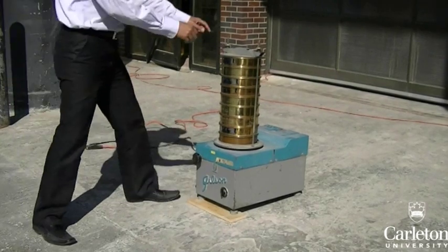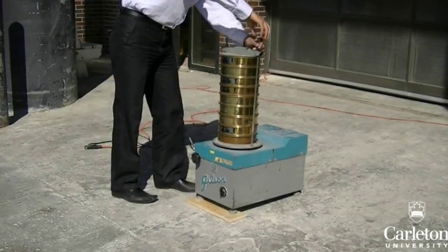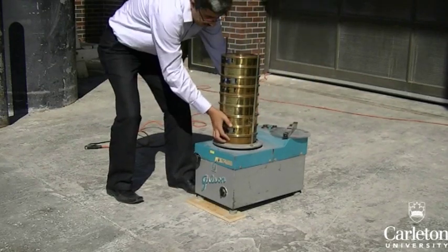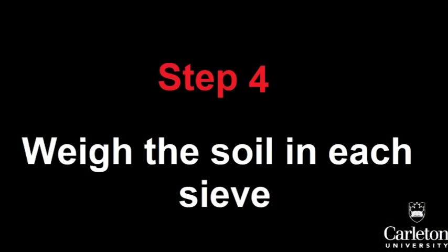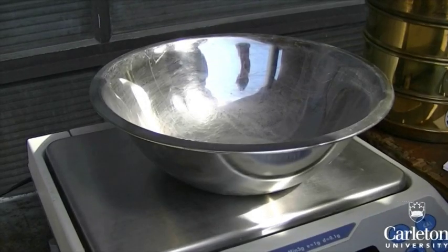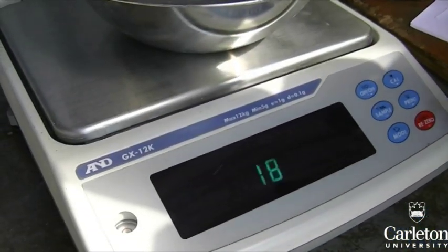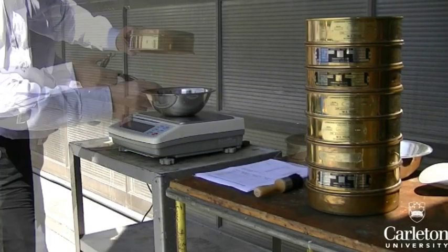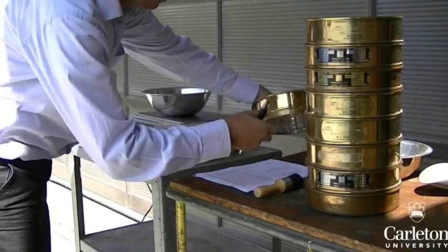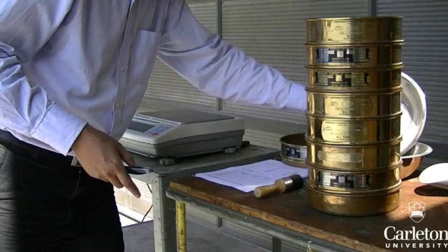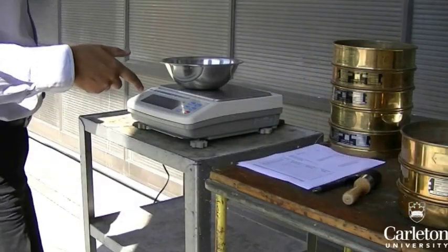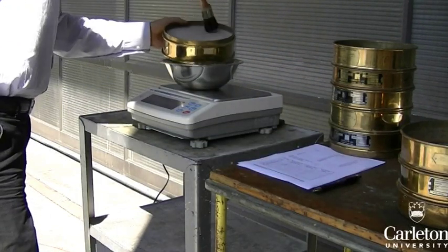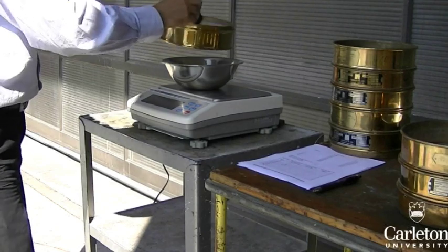After the shaker has stopped, loosen the screws and remove the stack. Next, you will need to take the soil in each sieve and weigh it on the scale. Place your container on the scale and zero the scale. Pour the contents of the first sieve into the bowl, record the mass of the material according to the size of the sieve, and then pour the contents of the bowl into another container for storage. With the finer grain sizes, use the brush on the back of the sieve to remove as much of the material as possible. Make sure not to spill any of the sample when you do this.